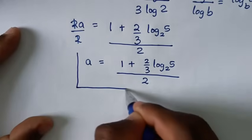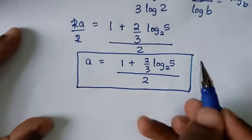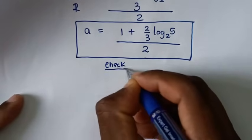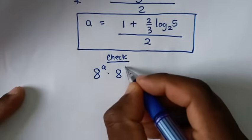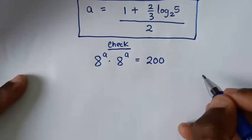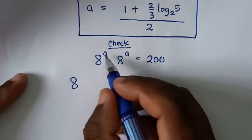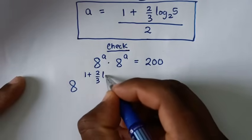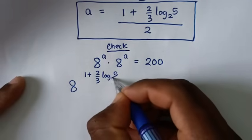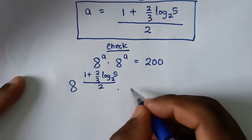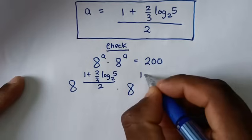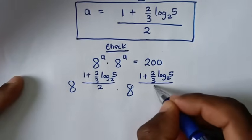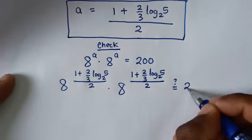So this is the final answer for the value of a, and this is our problem. Now let's check our answer to see if it is correct. From our problem, which is 8 power a times 8 power a is equal to 200, we substitute our answer for a, which is 1 plus 2 over 3 log base 2 of 5, all over 2, into each factor. Is this equal to 200?